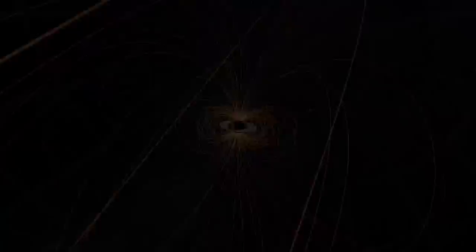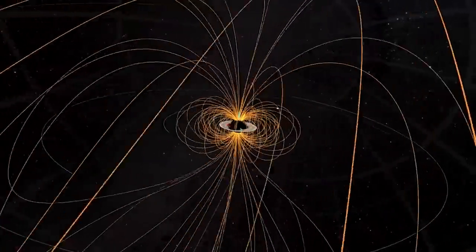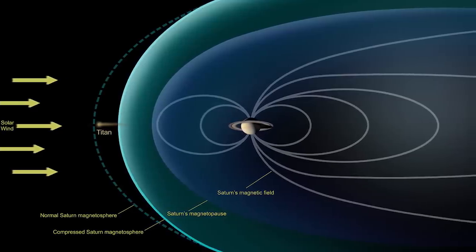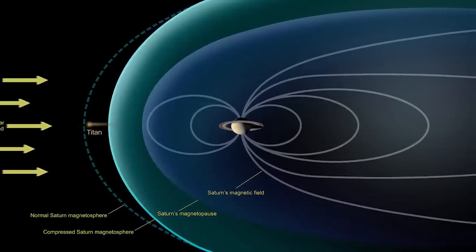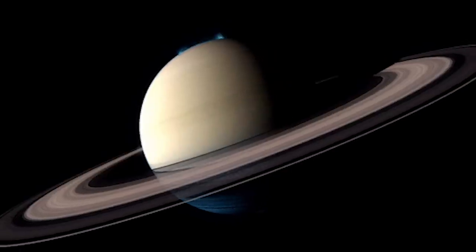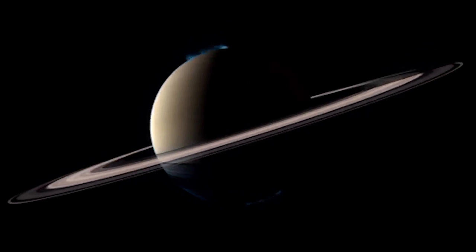Titan spends 95% of its time within Saturn's magnetosphere. This graphic illustrates Titan just outside of Saturn's protective magnetosphere for a short period of time during its 16-day orbit around the gas giant.